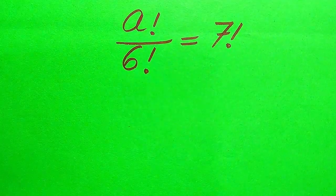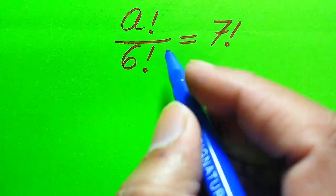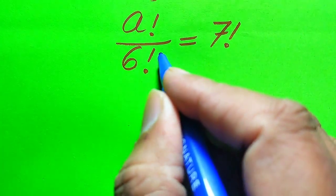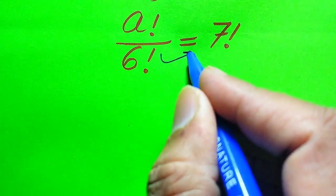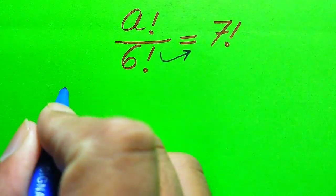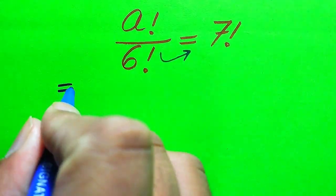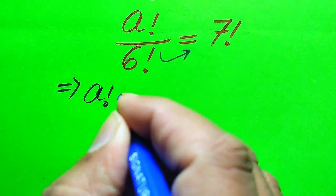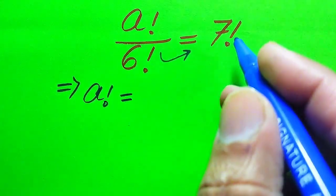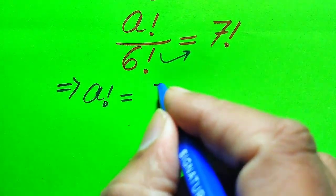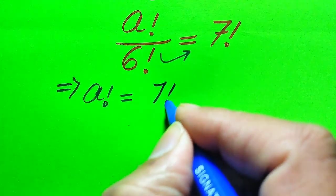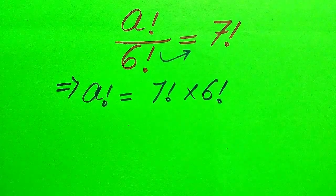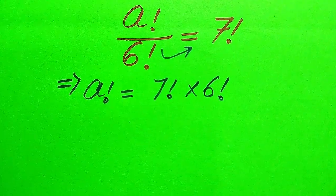Now we move towards the solution. First we need to move this 6 factorial from the left hand side to the right hand side. It is divided on the left, so when we move it to the right hand side it is multiplied, and we get a factorial equals 7 factorial multiplied by 6 factorial.